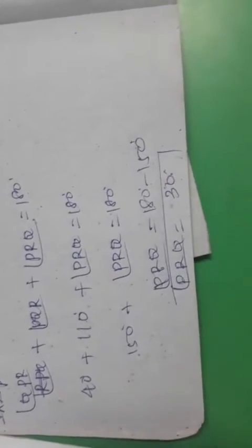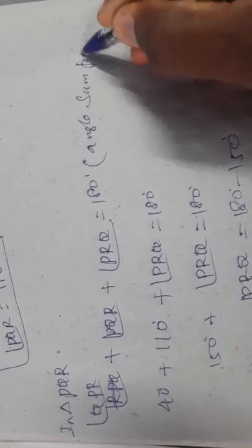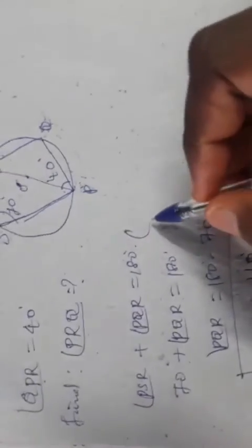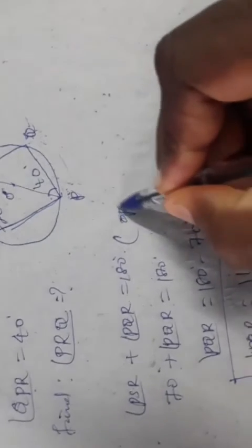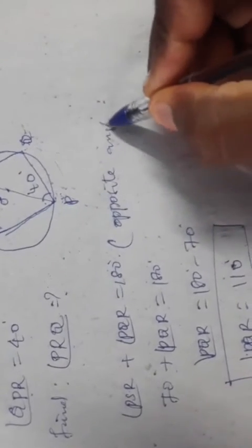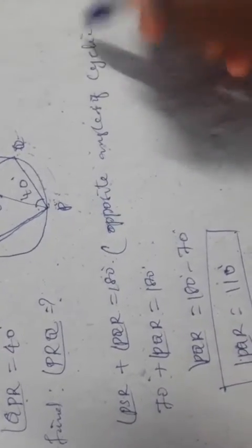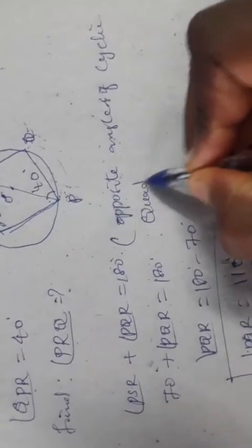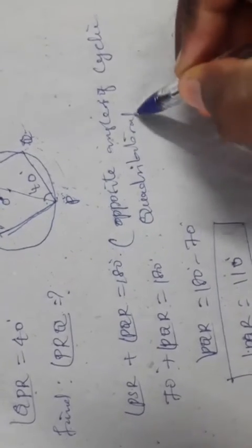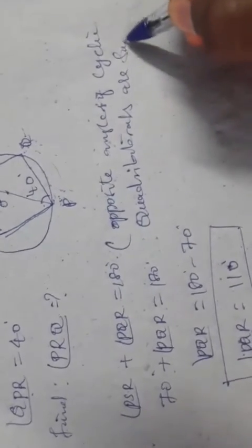Therefore, angle PRQ is 30 degrees, and hence the solution is complete. The reasons used are: angle sum property of a triangle, and opposite angles of a cyclic quadrilateral are supplementary.